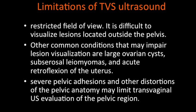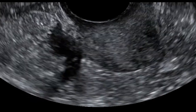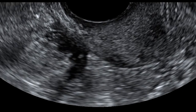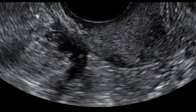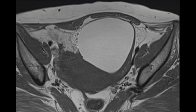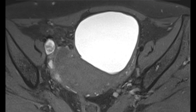The limitations of TVS include a restricted field of view, making it difficult to visualize lesions outside the pelvis, especially rectosigmoid lesions. Other conditions that may impair visualization include large ovarian cysts, subserosal fibroids, and acute retroflexion of the uterus. However, ultrasound remains the first initial investigation of choice when endometriosis is suspected, and a complete detailed evaluation of the pelvic structures must be performed. In most cases, especially those going for surgery, MRI of the pelvis is conducted to confirm nodules and detect lesions higher up involving the rectosigmoid that may escape detection on transvaginal ultrasound.